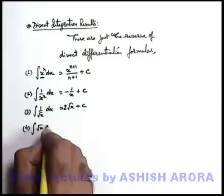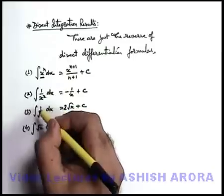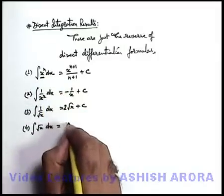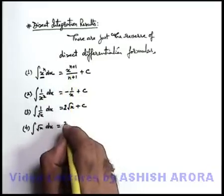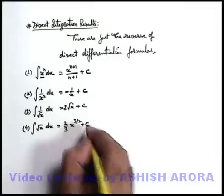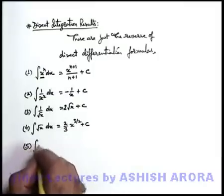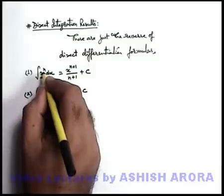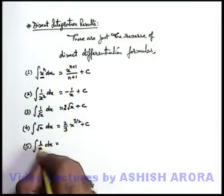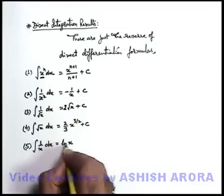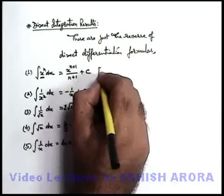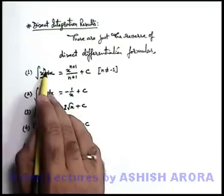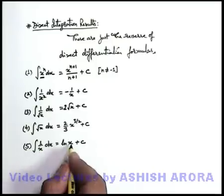For integration of √x dx, we can carry this out using the formula: it is x^(1/2) dx, so this becomes x^(3/2) divided by (3/2), which equals (2/3)x^(3/2) + C. Regarding ∫(1/x)dx, some students feel it can be written as x^(−1) and use the formula — but it will not work, because 1/x is directly the differentiation of ln(x). So integration of 1/x is ln(x) + C. Note that n should not equal −1; the relation x^n is valid for all values of n except −1, because when n = −1 the result is a logarithmic function.